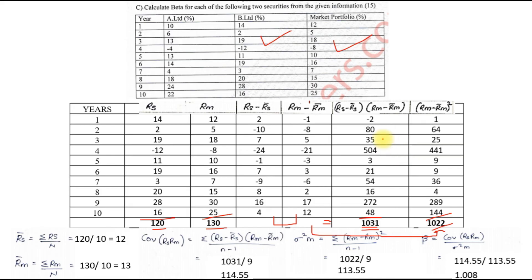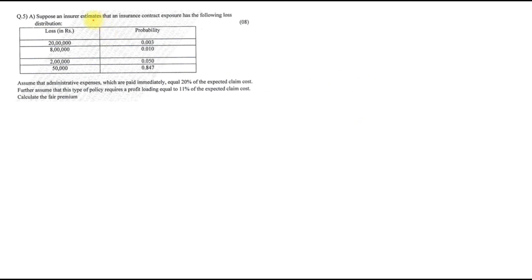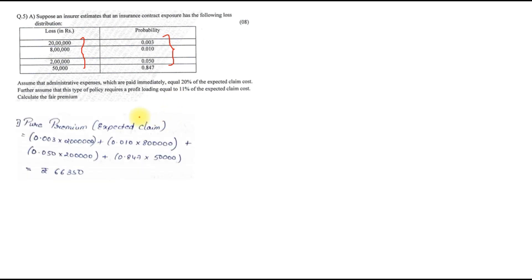Now we jump to the last question. Suppose an insurer estimates that an insurance contract exposure has the following losses — they give you the loss amounts and various probabilities. Assume that admin expenses paid immediately equal 20% of expected claim cost, and that the profit loading equals 11% of the expected claim cost. Calculate the fair premium. Note: since interest is not given, we assume and take it as 8%.